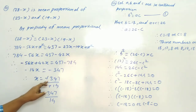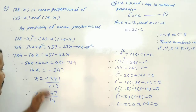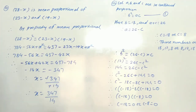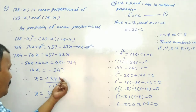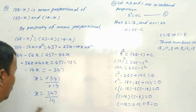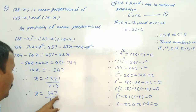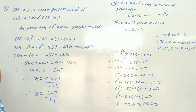So x equals minus 347 divided by minus 14. The negatives cancel, and since 347 and 14 cannot be further simplified, x equals 347 divided by 14. This is the final answer.